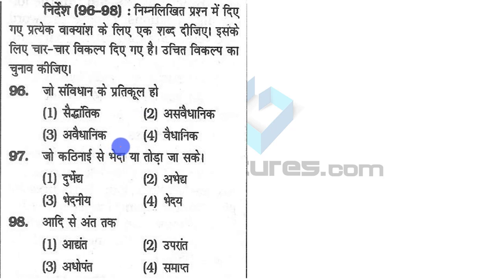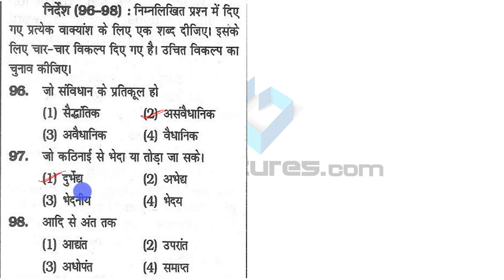They have given one word to replace the given part of a sentence. 'Asanvidhanic' means unconstitutional — illegal or unconstitutional. 'Dur bhedye' means which is tough to conquer or break. 'Adi se ant tak' means from beginning to end, known as 'adhyant.' These are one-word substitutions to replace parts of sentences.